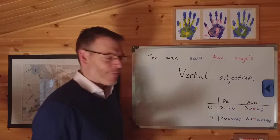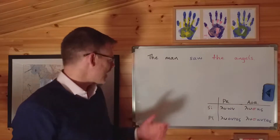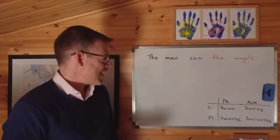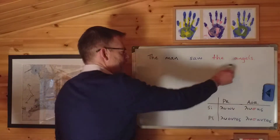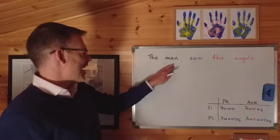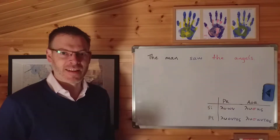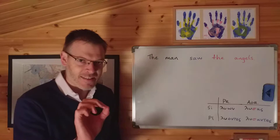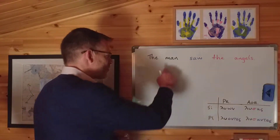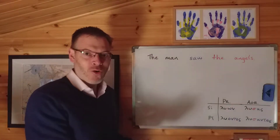Well, at one level it's straightforward. It means that it behaves a little bit like an adjective and has some of the characteristics of an adjective, and also behaves a little bit like a verb and has some of the characteristics of a verb. So let's think about that in relation to this example sentence in English: 'The man saw the angels.' Subject, verb, object. There are no adjectives in here, but we could put adjectives in here, couldn't we? If we wanted to say something about this noun, we could put an adjective in to say something more about this noun.